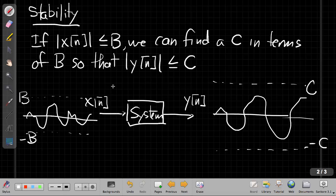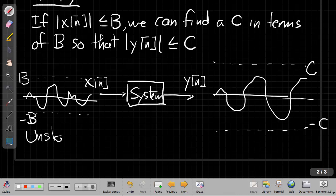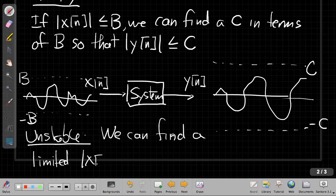Sort of equivalently, or on the other side, if I want to talk about things that are unstable, if a system is unstable, which is not a good thing in general, this means that we can find, to show a system is unstable, we can find a limited or bounded x[n].